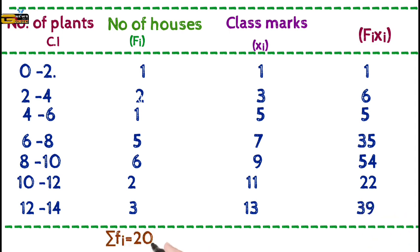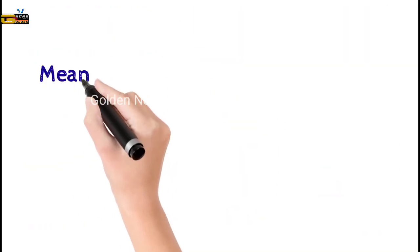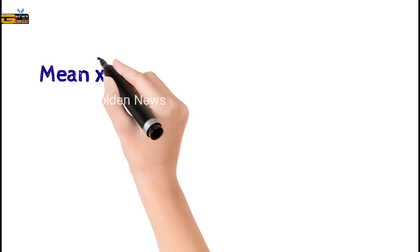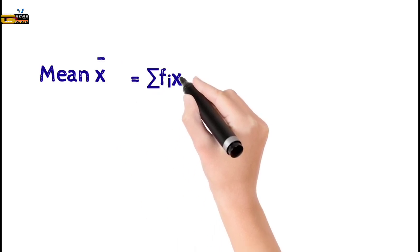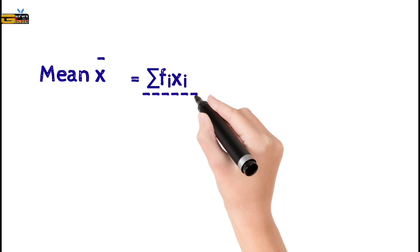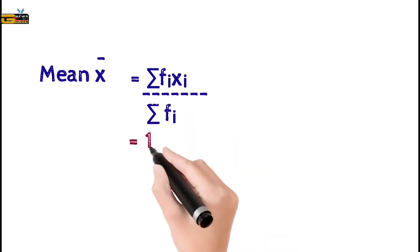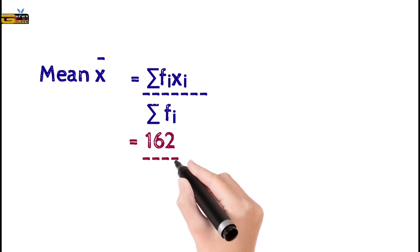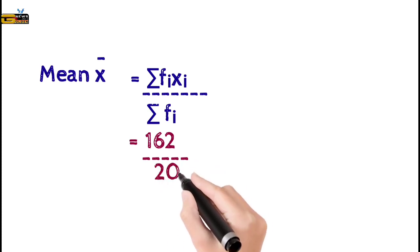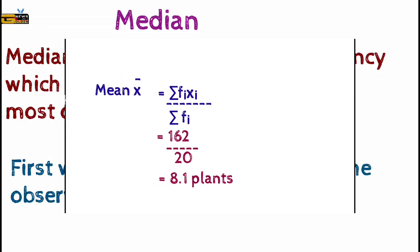Now σfi = 20 and σfixi = 162. Using the formula mean = σfixi / σfi, substituting: 162 divided by 20. Simplifying, we get the answer 8.1 plants.